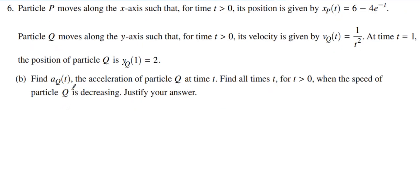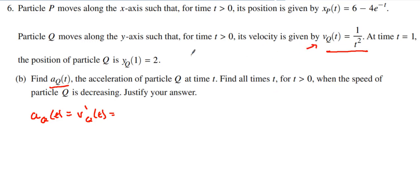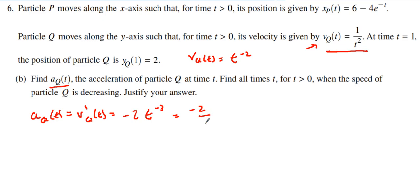Part B says find the acceleration of particle Q. To find the acceleration of particle Q, we take the derivative of particle Q's velocity function. I want to rewrite the velocity function as t to the negative two power — that makes it much easier to differentiate using the power rule. Applying the power rule gives negative two times t to the negative three, which simplifies to negative two over t cubed. That is the acceleration function.